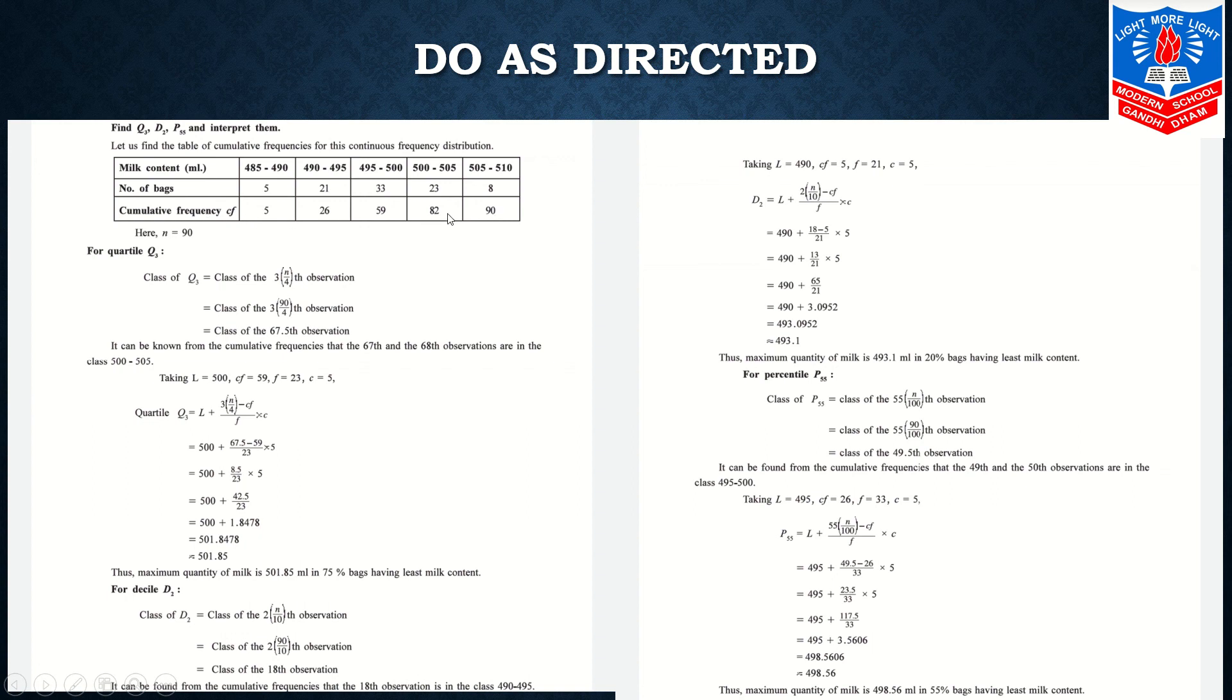CFI is given to you people. I am repeating again: you have to calculate the total of frequency, that is part of your answer, and calculate CFI, that is also part of your answer. Over here N is 90. We start with the calculation of Q3. Class of Q3 equals to class of 3(N/4)th observation. Same as we calculated median in continuous frequency distribution, we take 3N/4. So class equals to 3 times 90 divided by 4, final calculation you will get 67.5th observation.